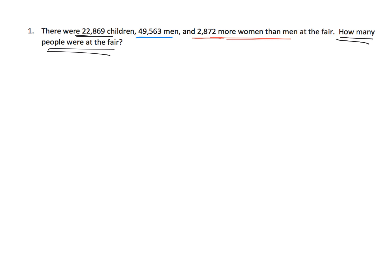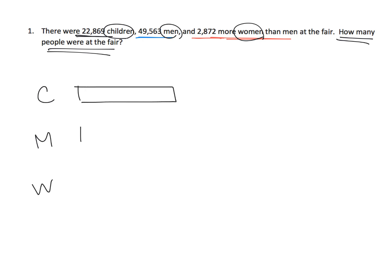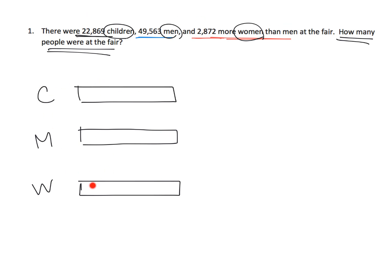I see we've got children, men, and women. So I'm going to label children, men, and women. And I'm going to begin by giving all three tape diagrams the exact same length, best I can draw. That's generally the theme — you look for the characters, you label them, and then your tape diagrams, you start off with all three of them the same length. And then you go back and read the question again.